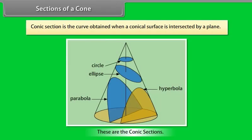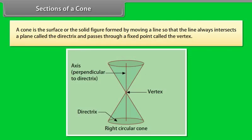Sections of a cone. Conic section is the curve obtained when a conical surface is intersected by a plane. We know that a cone is the surface or solid figure formed by moving a line so that the line always intersects a plane called the directrix and passes through a fixed point called the vertex.